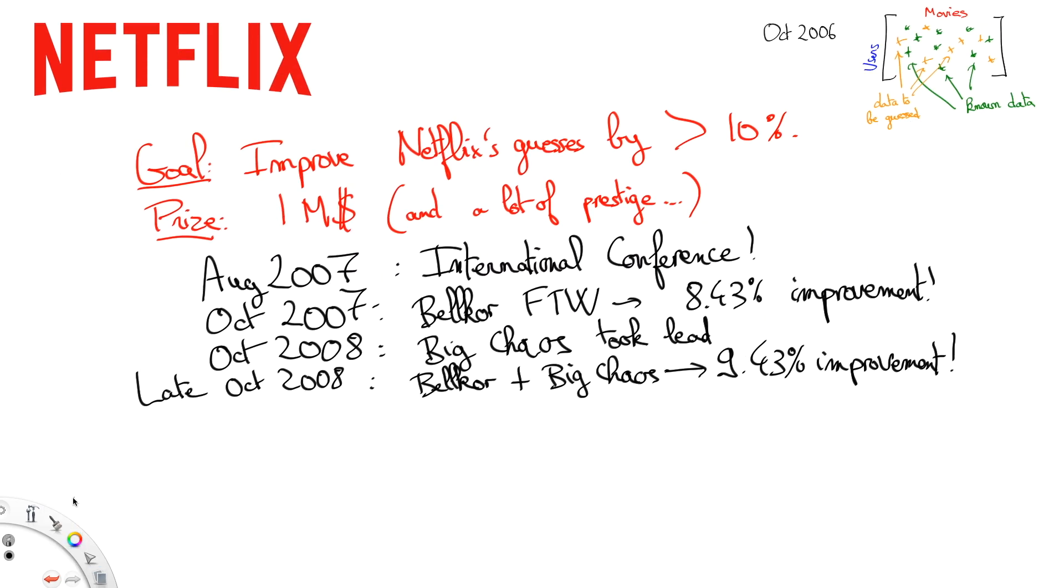It took another 8 months for the merger of Big Chaos & Bellcore to finally finish the race towards a 10% improvement. On June 26, 2009, the now-called Bellcore's Pragmatic Chaos team achieved a 10.05% improvement. As stipulated by Netflix's rules, a last-call phase was triggered. Candidates had until July 26, 2009, 6:42pm in Coordinated Universal Time to submit new results.